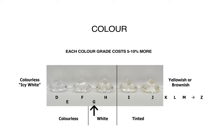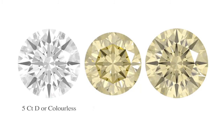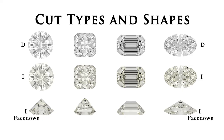Size does count, and if you compare a poorly cut stone it is yellower still. You can see the badly cut stone has uneven colour distribution. So the cut type and the shape count too.